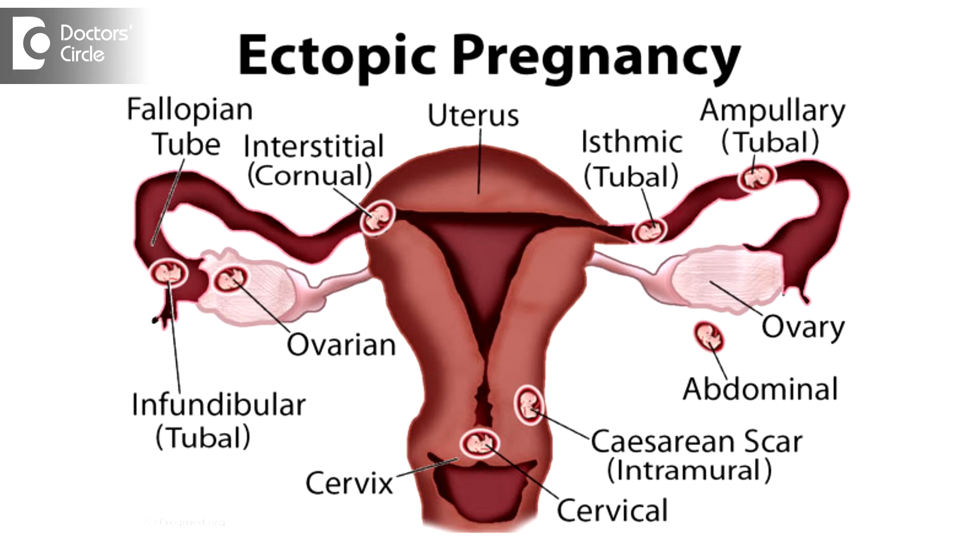There are different types of ectopic pregnancies. The most common type is fallopian tube pregnancy, seen in about 97% of cases. There can be interstitial pregnancy. Sometimes the pregnancy is implanted in the abdominal cavity, which we call abdominal pregnancy — its incidence is less than 1%. Sometimes ovarian pregnancy is also found, with a very low incidence, where the pregnancy is implanted on one of the ovaries. Very rarely, pregnancy is also seen in the cervical canal, which is a very dangerous situation.